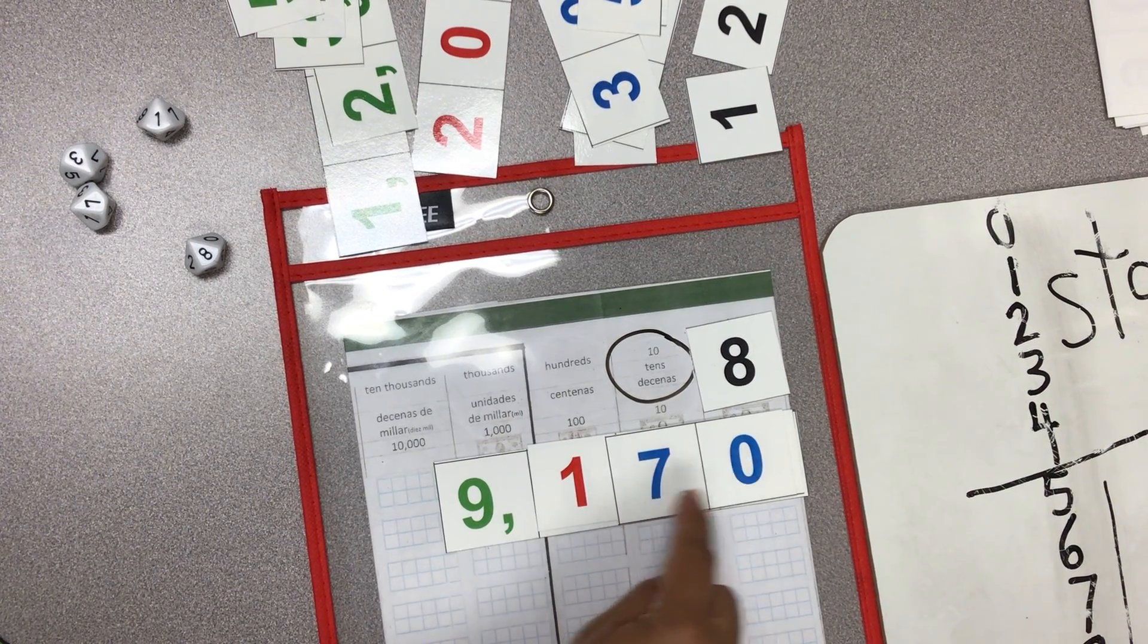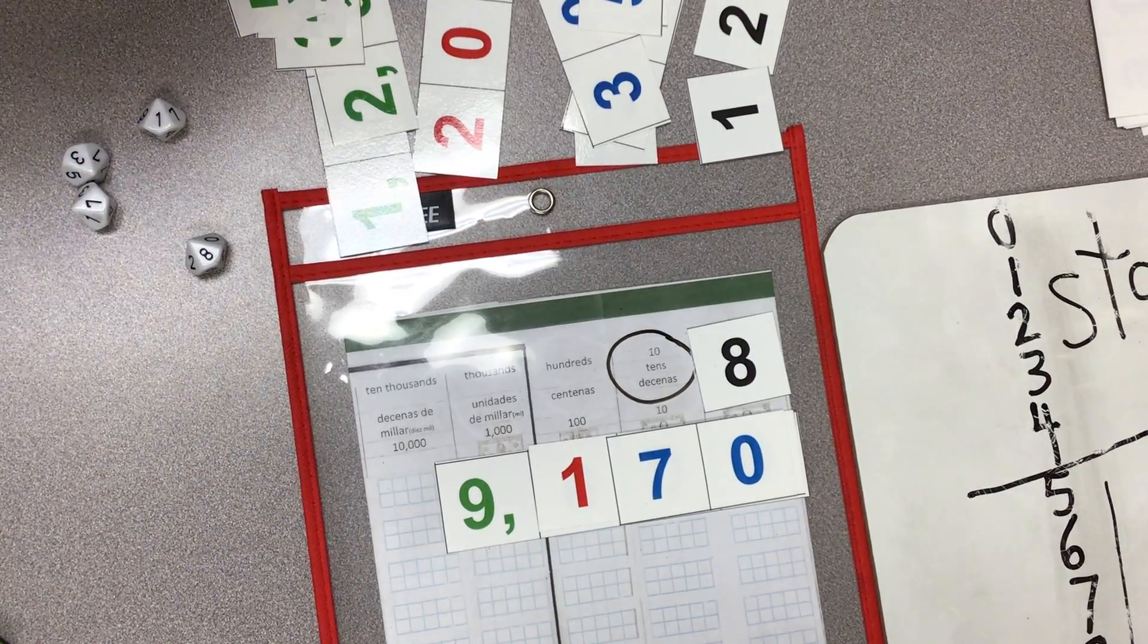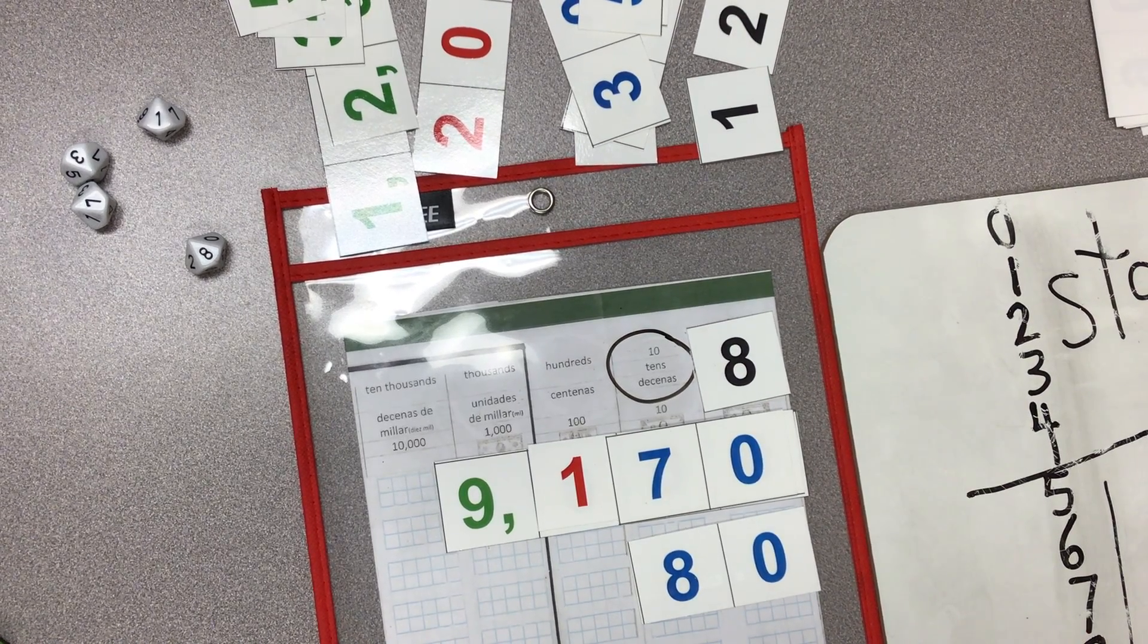How much is seven tens? Seventy. Very good. So what's the next ten? Eighty, right? So it's 9,180.